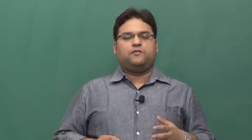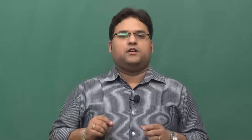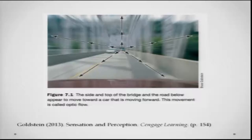Another important source of information is the focus of expansion. If a person is moving in the direction of the train, there will be a small point further ahead in the direction of movement — that is the focus of expansion. It seems that the flow is emanating from that point, but that point itself has no optic flow at all. All the optic flow is emanating from that direction.